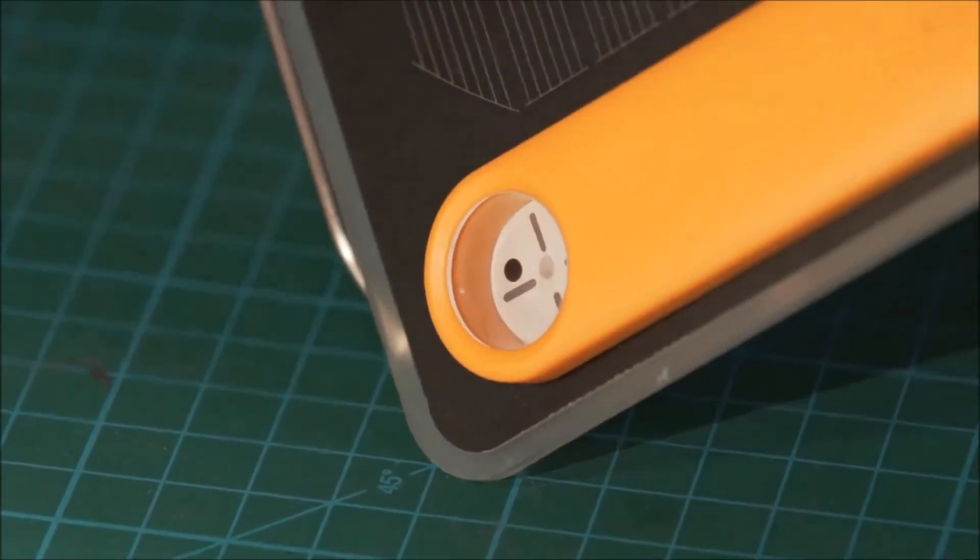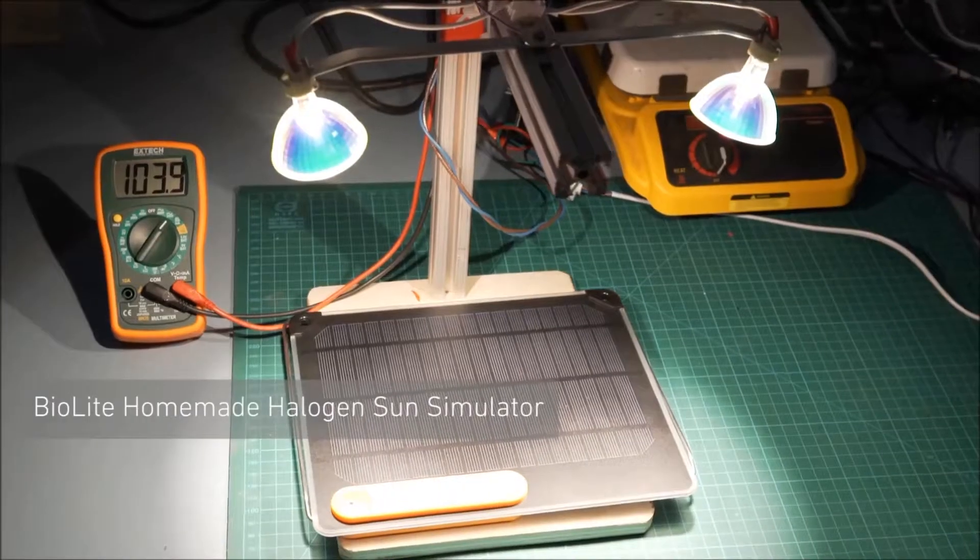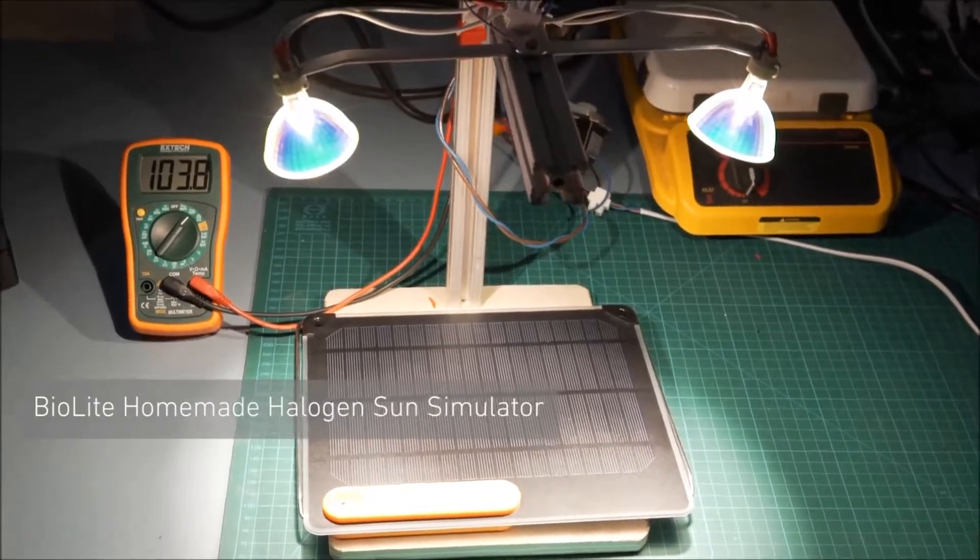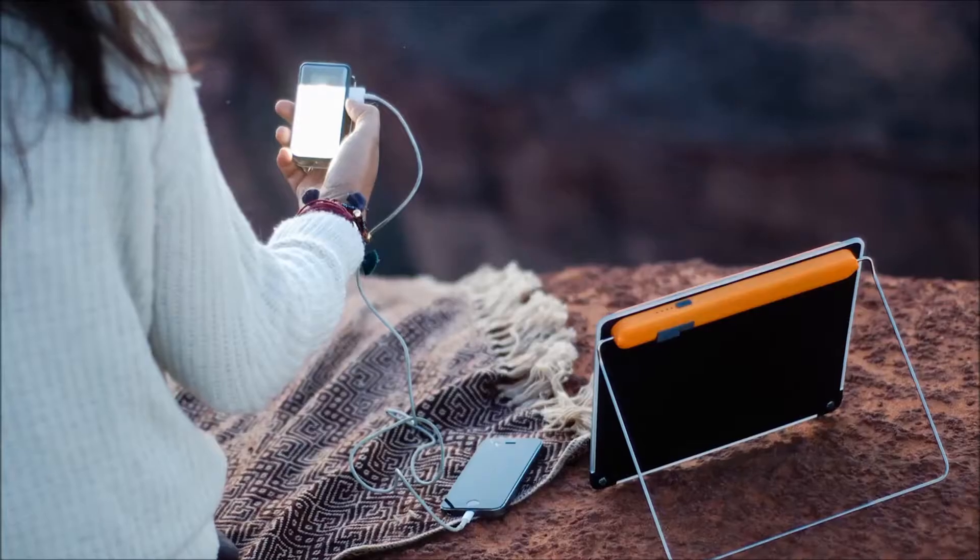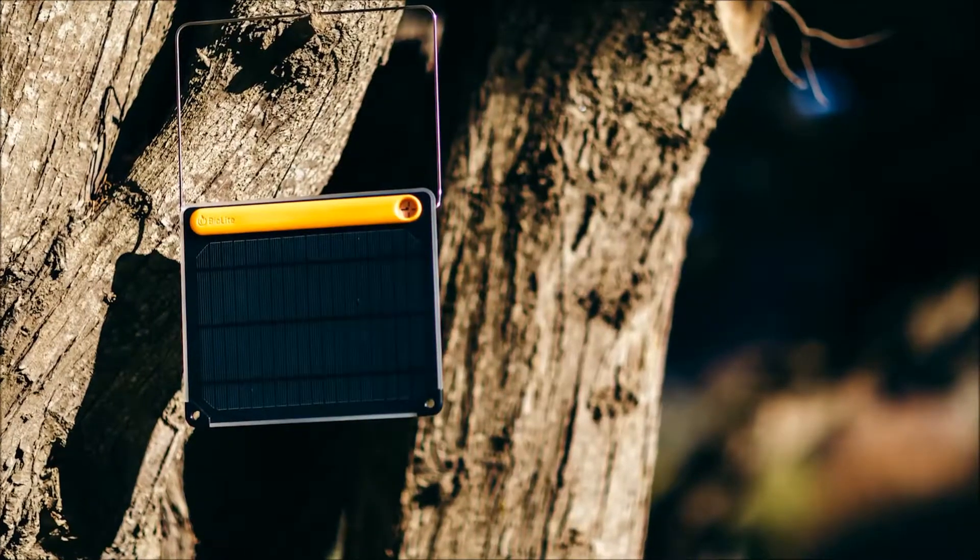For alignment, we went old school with an analog sundial, an easy way to track the sun without drawing any power from the panel. For stabilization, we built a 360-degree kickstand so you can position the panel on any terrain or from any angle.